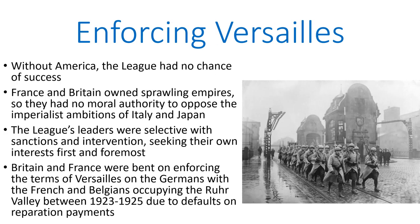The League of Nations had a number of responsibilities, not least of which was enforcing the Treaty of Versailles and preventing Germany from rising up again. Without America's involvement, the League had no real chance of success. During the 1920s, when the allied countries still had money, they were fairly strict about enforcing the Treaty of Versailles. France and Britain owned sprawling empires, however, and this meant that they had no moral authority to oppose the imperialist ambitions of Italy and Japan, their erstwhile colleagues on the Executive Council. And because they could not and would not oppose these other countries from engaging in imperialism, small countries began to lose faith in British and French leadership. The League's leaders were very selective with their sanctions and interventions, seeking their own interests first and foremost.